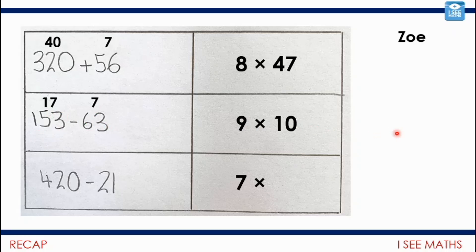And then the last one — I thought, well, 7. 7 goes into 420 and 21. So 60 sevens is 420, 3 sevens is 21. So it must in total be 63 lots of 7. Well, that was a warm-up. Thank you, Zoe.